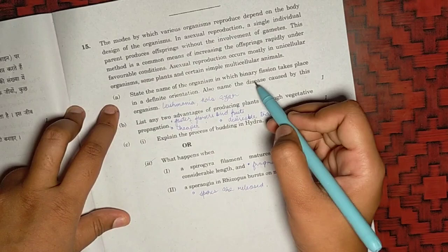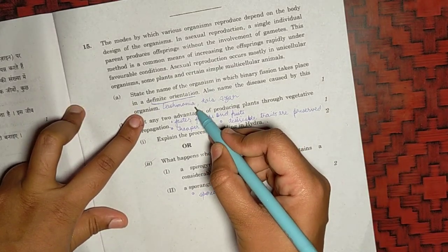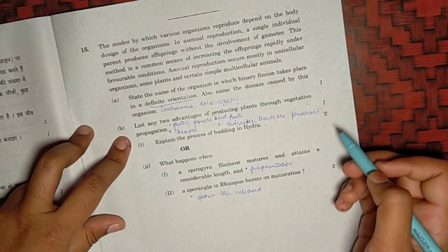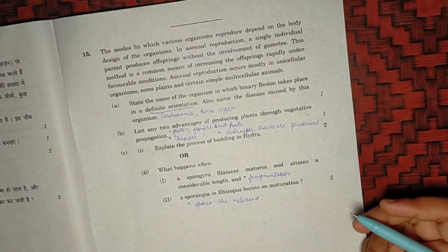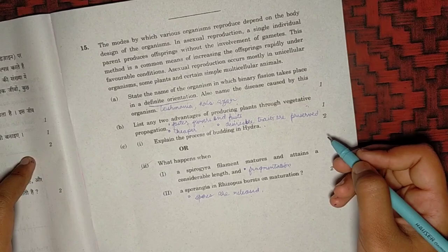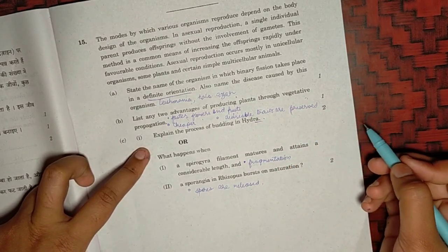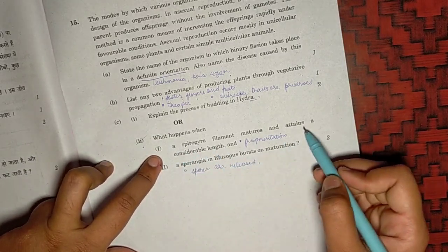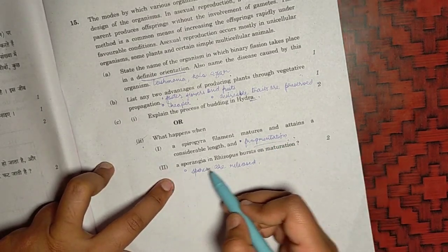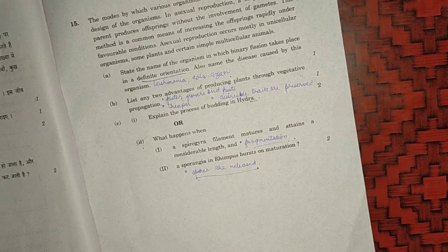For the last question, fifteenth. Question number A, which takes binary fission in a definite orientation. Definite orientation means as Leishmania is an example of this where it takes place longitudinally and it causes the disease named as Kala-azar. Two advantages of producing plants through vegetative propagation. There are many advantages. First is faster production of flowers and fruits. It's a cheaper method. And then there are desirable characteristics that can be preserved. And the plants that do not produce viable seeds like bananas, oranges can also reproduce through this. For the C part, you need to show the diagram and the whole process of how a bud forms and it detaches from the hydra. And for the second part of C or part A, spirogyra. When it retains a considerable length, it undergoes reproduction through fragmentation. You need to elaborate the fragmentation process. And the second one, when a sporangia bursts, as spores are released, and you need to explain how the spores are released and how they again form a new Rhizopus.